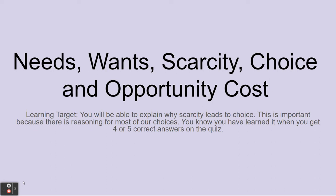Needs, wants, scarcity, choice, and opportunity cost. The learning target is being able to explain why scarcity leads to choice. It's important because this kind of reasoning goes along with most of the choices that we make. And you know you have it when you get four or five correct answers on the quiz.